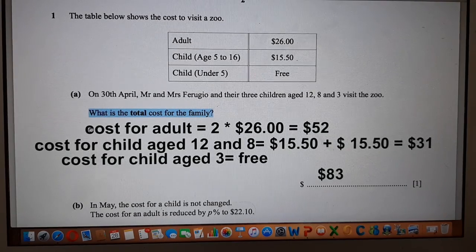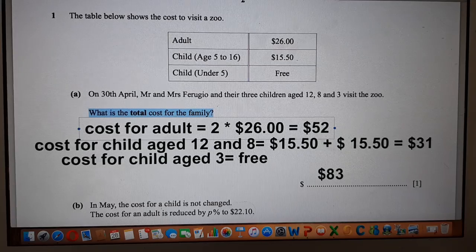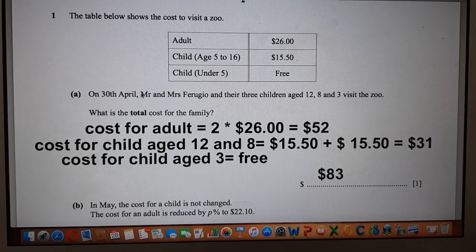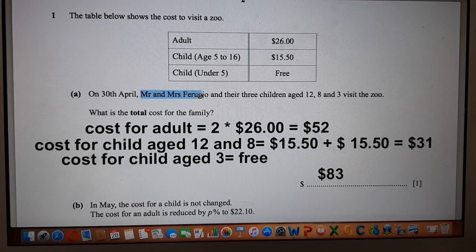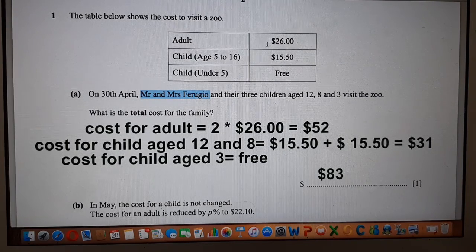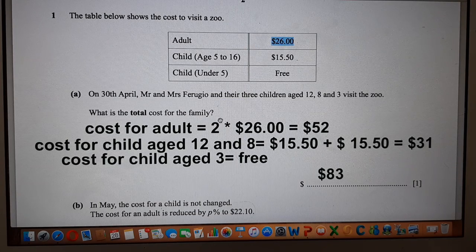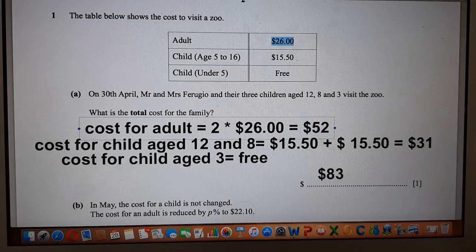Cost for the adults, where Mr. and Mrs. Fugio will be included. Because adults are charged at $26, and there are two adults, so 2 into 26 will give you $52.